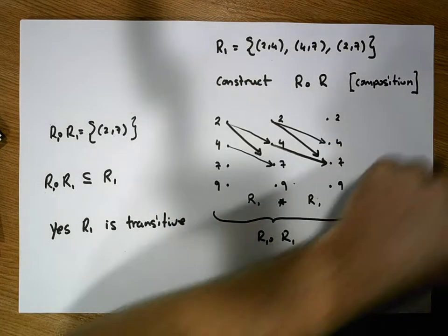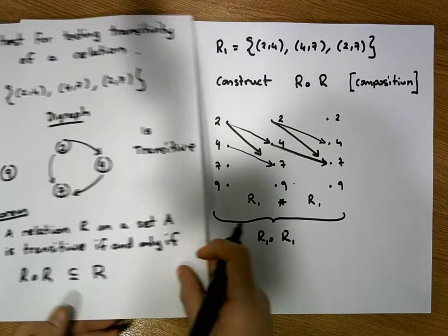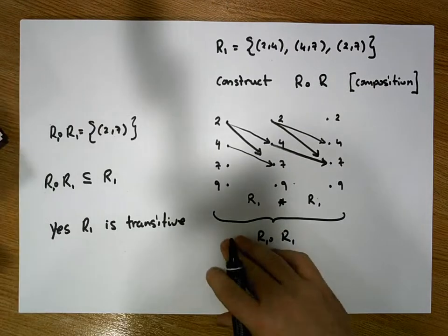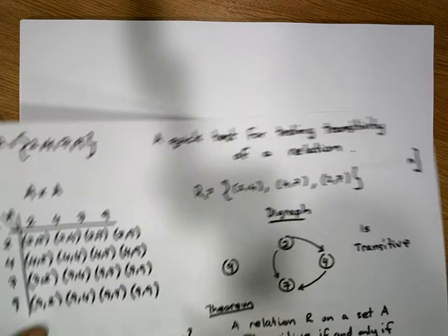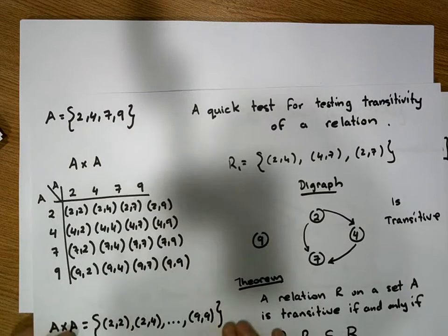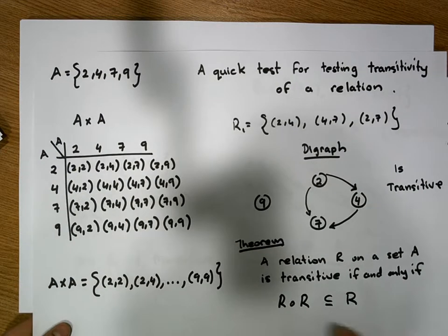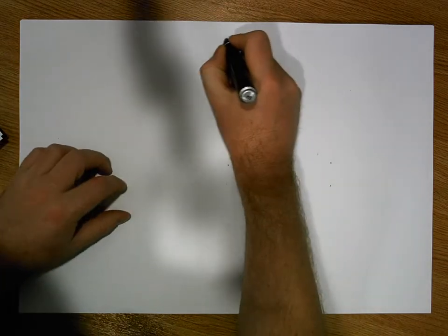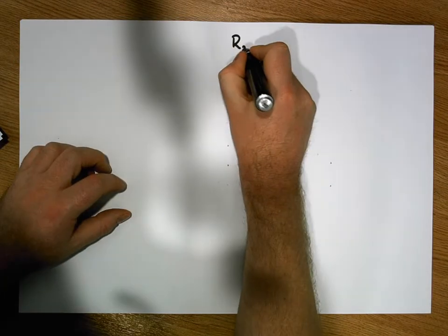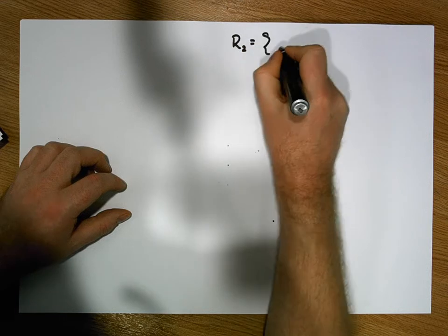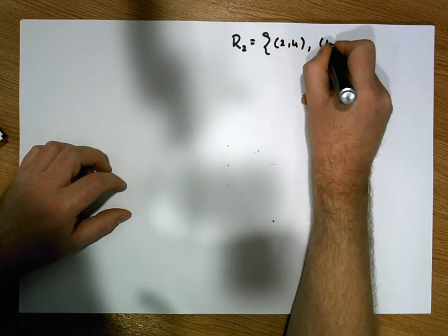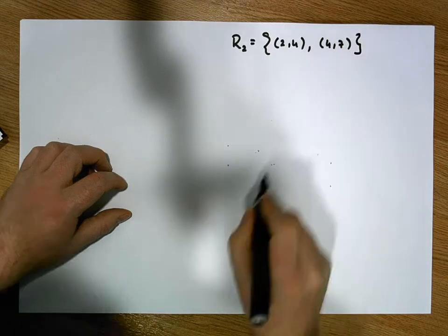We know the test works for a transitive relation, which we already confirmed by inspecting its digraph. Now let's consider another relation on set A — another subset taken from the Cartesian product. Let's consider relation R2, which equals the set containing the ordered pairs (2,4) and (4,7).